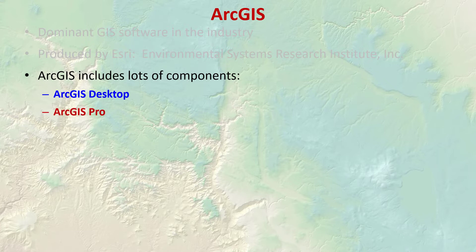There's ArcGIS Pro — a new product that's come out recently that's going to eventually replace Desktop. It already replicates a lot of the Desktop functions but still falls short in a few others, which is why we're sticking with Desktop for now. The future of ESRI software is in ArcGIS Pro. There's also ArcGIS Server, which is used to connect with complex geodatabases and link those geodatabases out over the internet so you can use web services to interact with them.